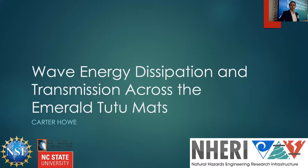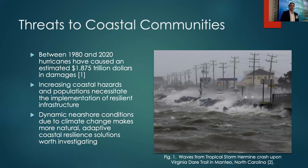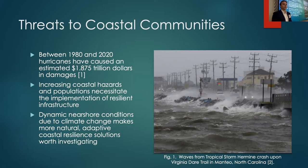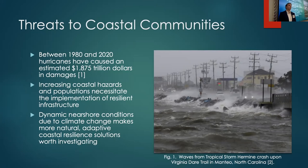Every year, east coast communities are threatened by the potentially devastating effects of hurricane season. Between 1980 and 2020, hurricanes have caused nearly two trillion dollars in damages, and current socioeconomic and climate trends indicate that yearly hurricane impact and cost may increase by at least fourfold. Communities are constantly looking for resilient infrastructure to protect their shorelines, typically in the form of hard engineered infrastructure like seawalls or breakwaters. However, dynamic nearshore conditions due to climate change — such as sea level rise — have made more natural adaptive solutions worth investigating.